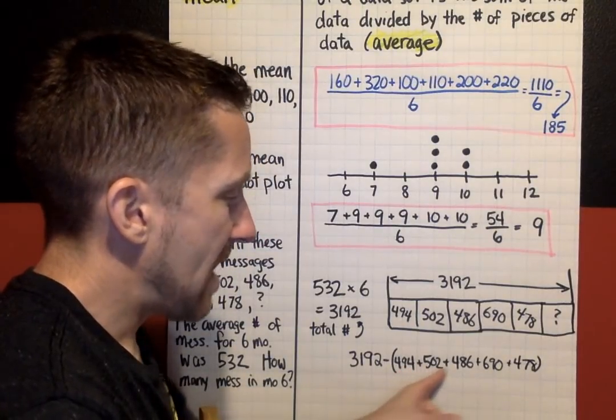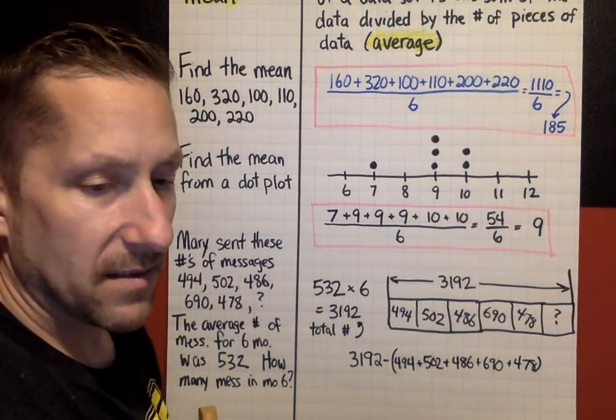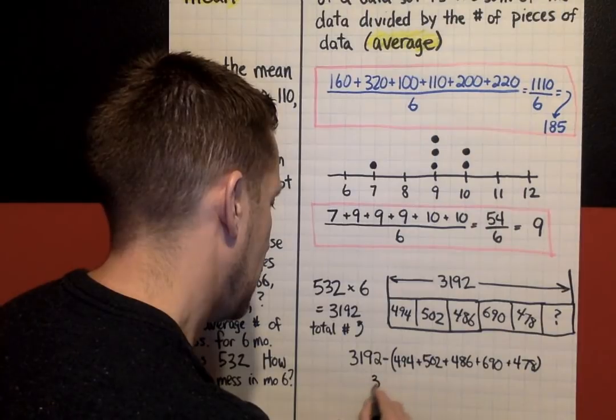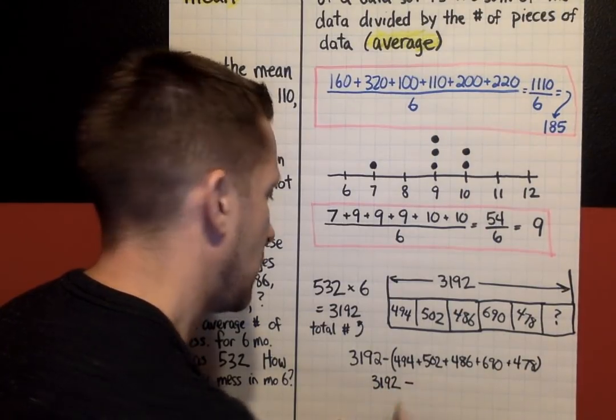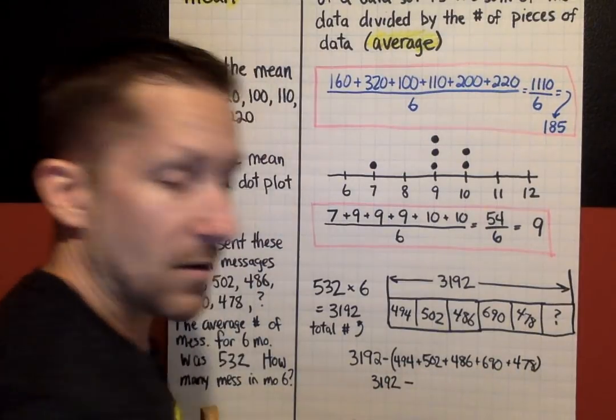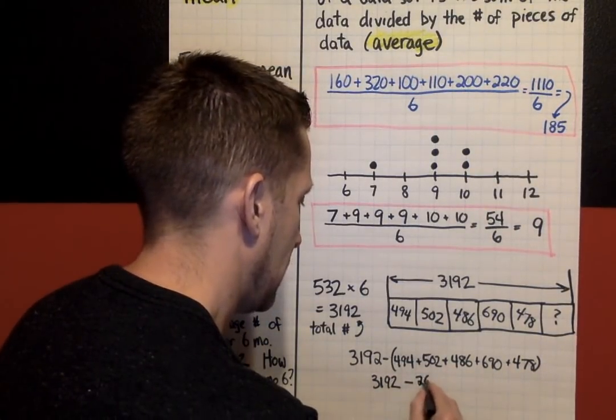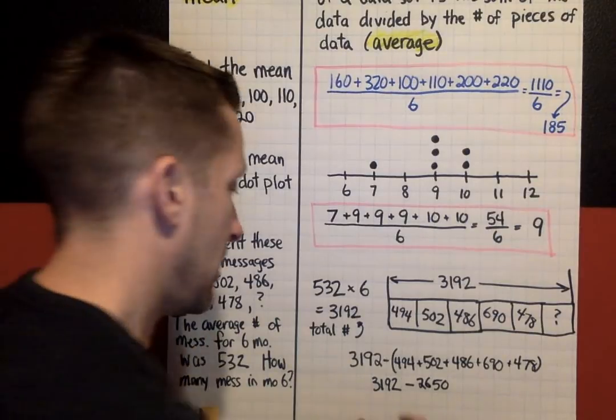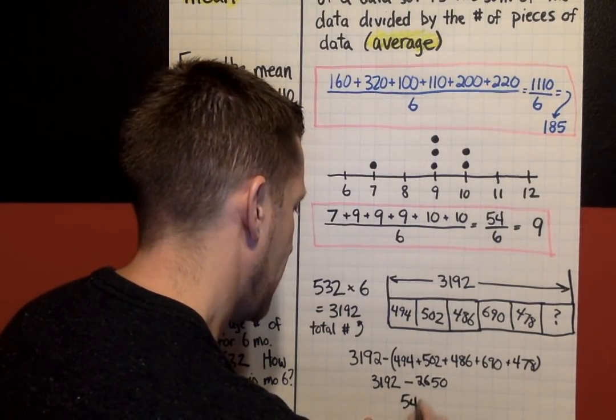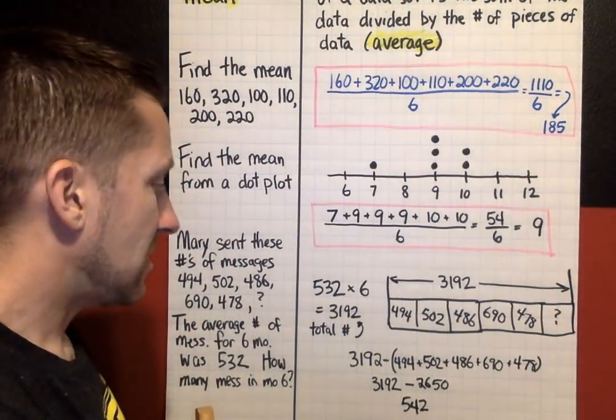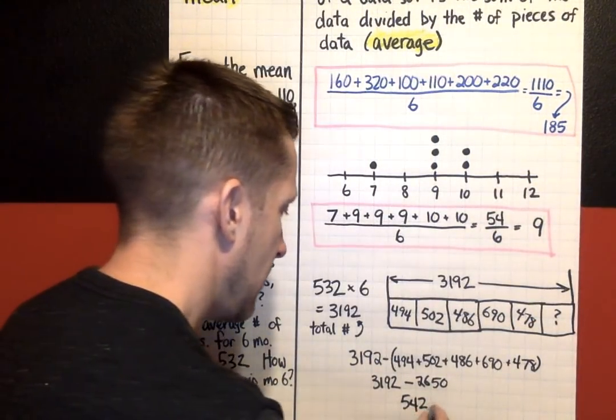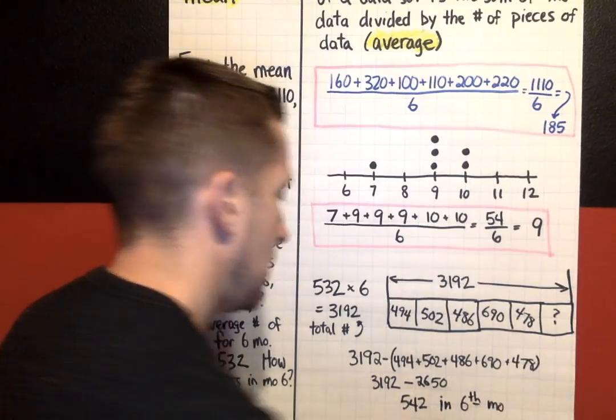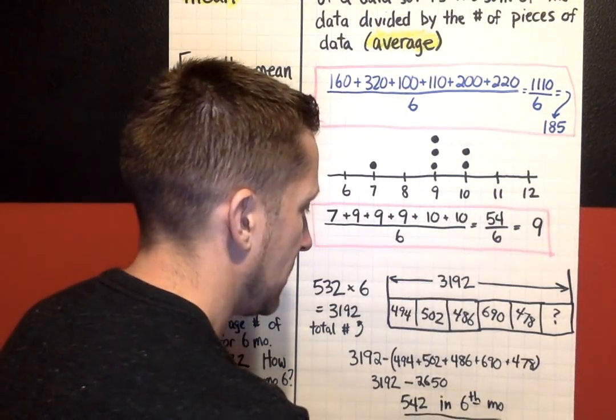I would add all of those first because they're in parentheses. So the next line would look like this: 3,192 subtract. Adding all those on your calculator should give you 2,650. Then when you subtract right here, you would have 542. So the last month, that month six, she sent 542 messages in the sixth month.